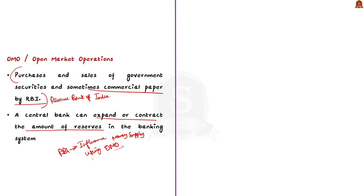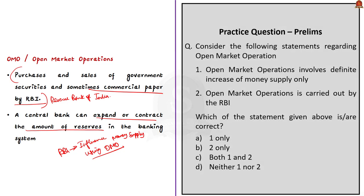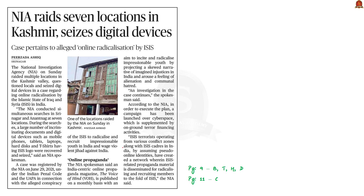In this news article, we saw about open market operations as well as about the borrowing limits for states and the reforms linked with it. Coming to the last news article for today's discussion: 'NIA Raids Seven Locations in Kashmir, Seizes Digital Devices.' The National Investigation Agency raided multiple locations in Kashmir Valley while dealing with a case regarding online radicalization by the Islamic State of Iraq and Syria (ISIS) in India.